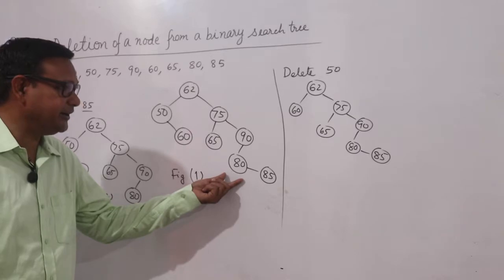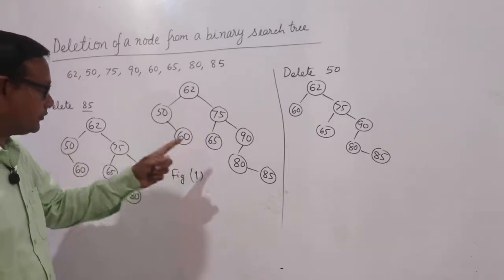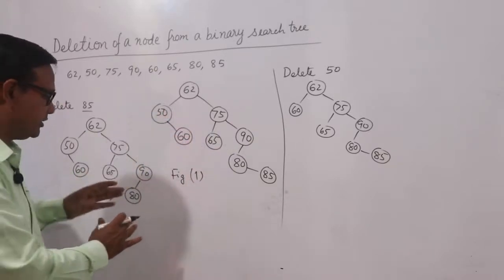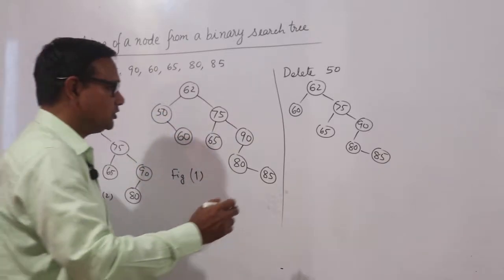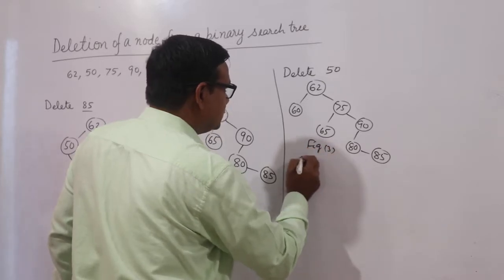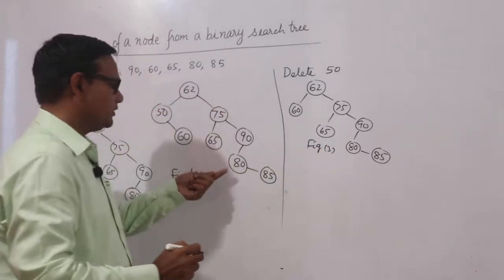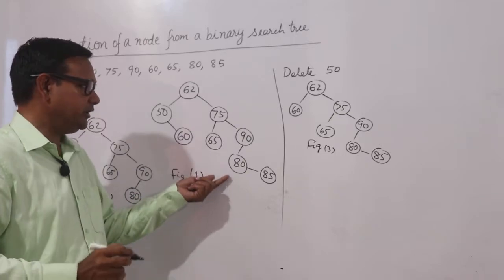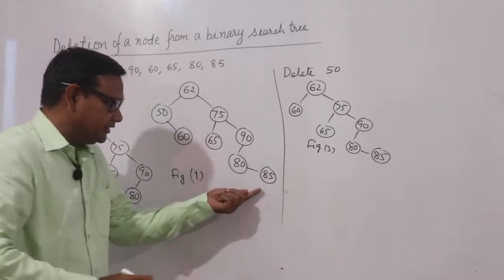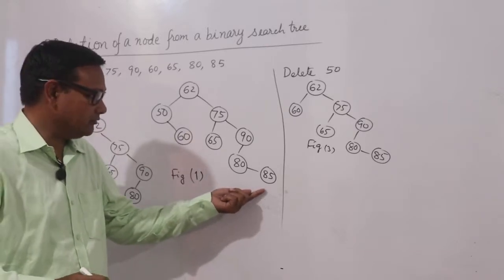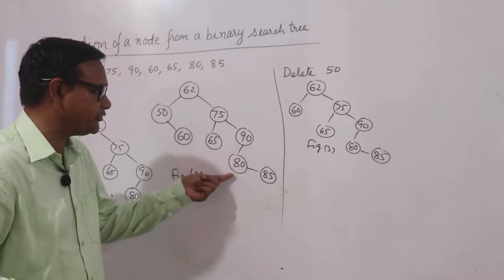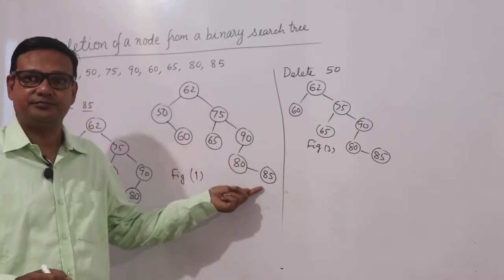Now I have to delete 80, using Figure 1. If I delete 80, then 85 is the node which is less than 90, so it will be the left child of 90.